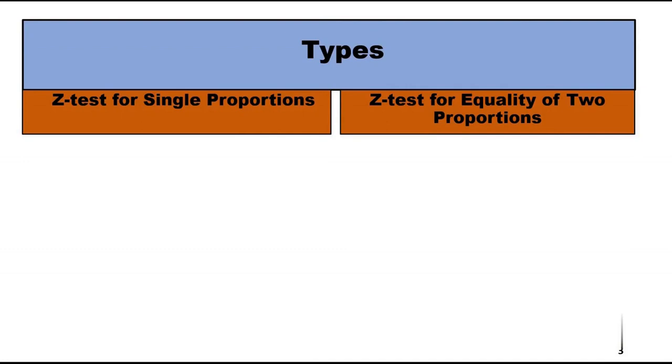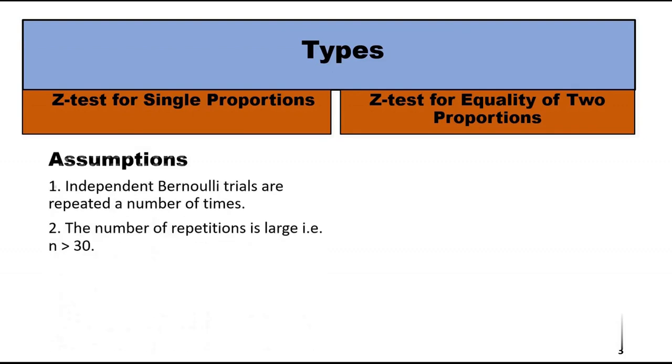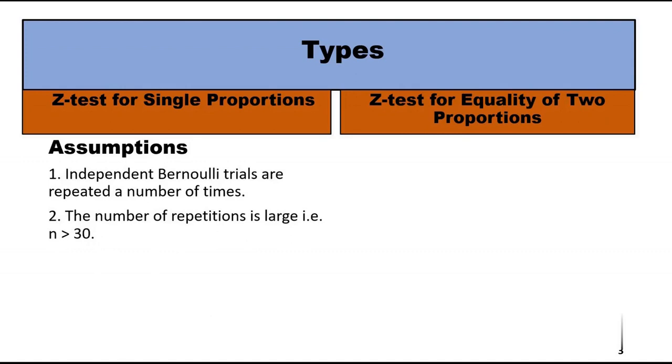Every test has their own assumptions. The assumption for z-test of single proportion is independent Bernoulli trials are repeated a number of times and the number of repetition is large, that is n greater than 30. This is the test statistic along with the null hypothesis.